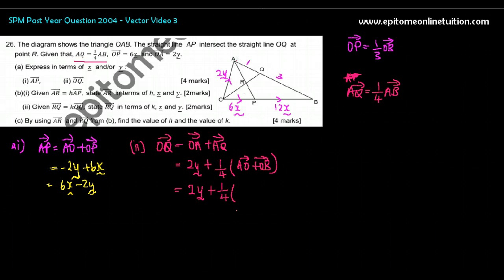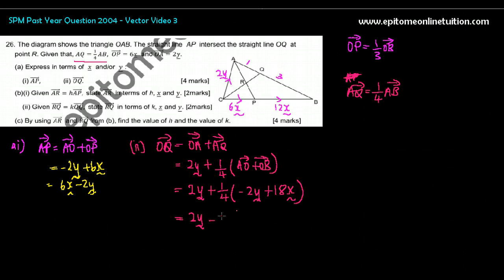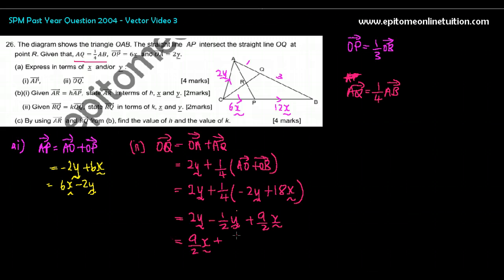So what's AO? Negative 2Y. And what's OB? That's 18X. So 2Y minus 1 over 2Y, expand the bracket, plus 9 over 2X. 18 over 4, 1 over 4 times 18, so it's 9 over 2. So that's 9 over 2X plus 1 and a half, so 1 and a half is 3 over 2Y. So that's your answer: OQ is 9 over 2X plus 3 over 2Y.